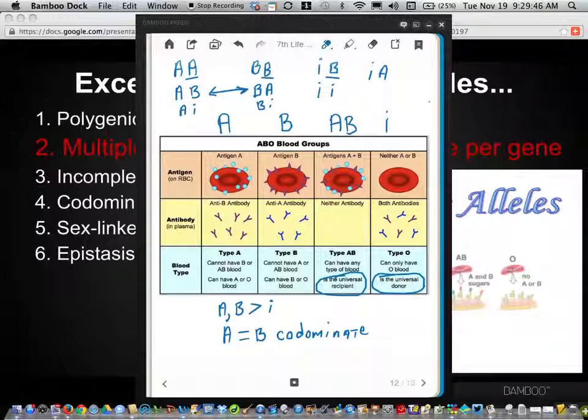What that means is that somebody who has blood type O can donate to anybody with no harmful reactions on the part of the receiver. Likewise, somebody who is blood type AB can get blood from anybody with no harmful effects.